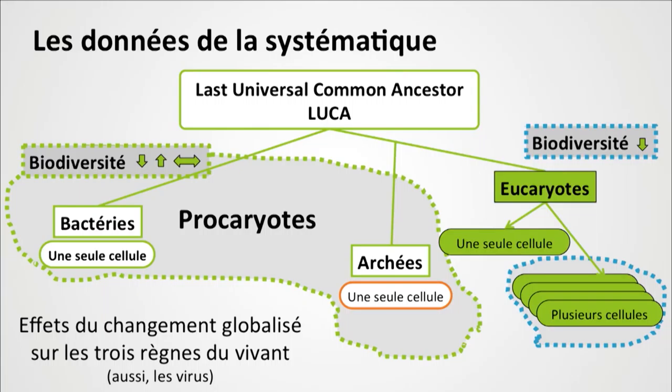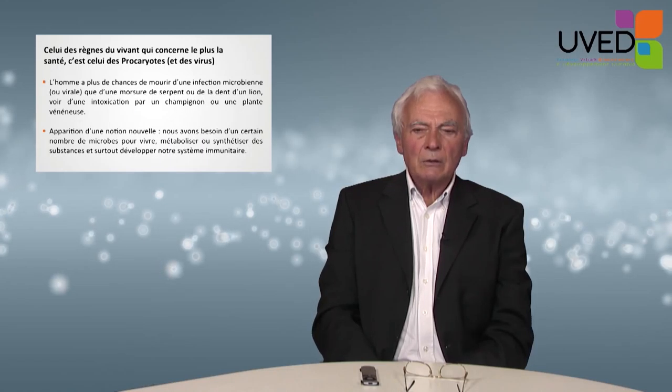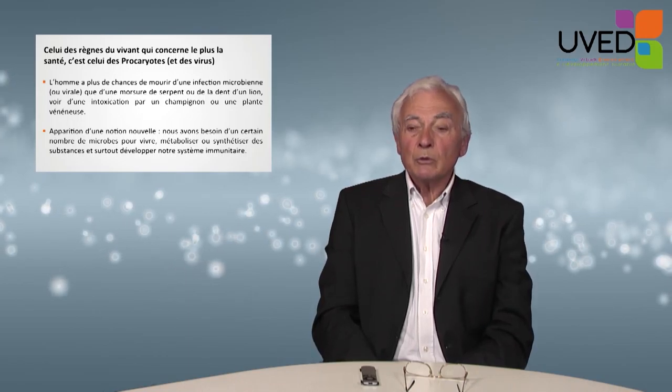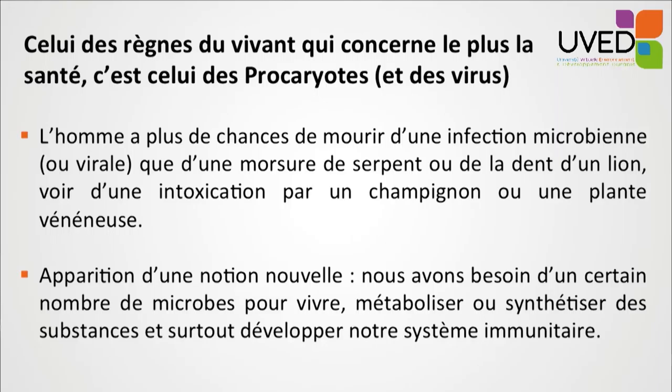That is what I'm showing on the left-hand side of my graph. We also must include viruses. Viruses are not necessarily considered as living beings by systematicians, but for physicians, prokaryotes — essentially bacteria — and viruses are the element components that matter. The world of prokaryotes and viruses is the one that matters to us. We have far more chances of dying of a microbial or viral infection than being bitten by a venomous snake, or eaten alive by a lion, or intoxicated by a mushroom or a plant.